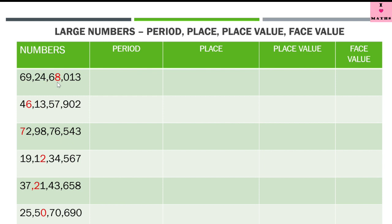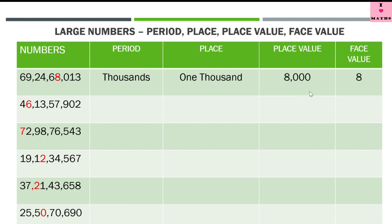The place value is 8000 — why is it 8000? Because 8 is lying at the thousands place, so the place value is 8000. And the face value is 8, because the face value of a digit is the digit itself. So: period is thousands, place is 1000, place value is 8000, and face value is 8.